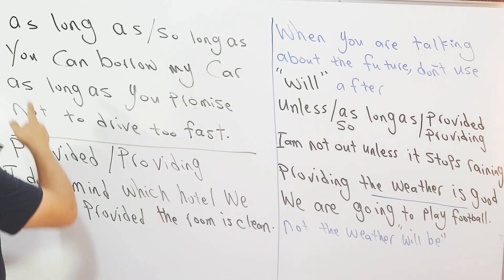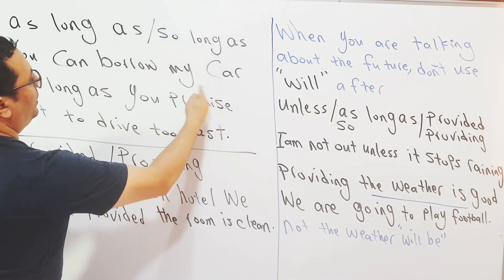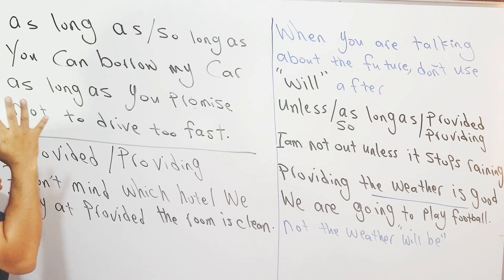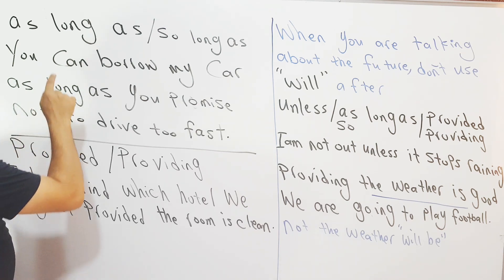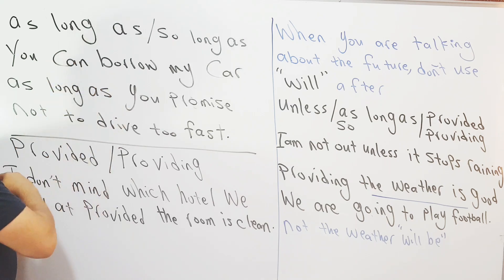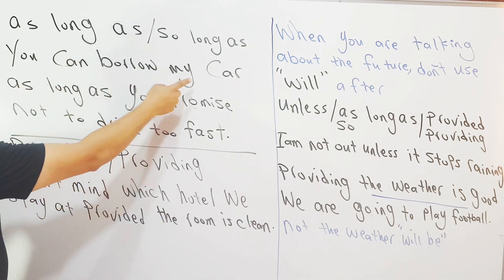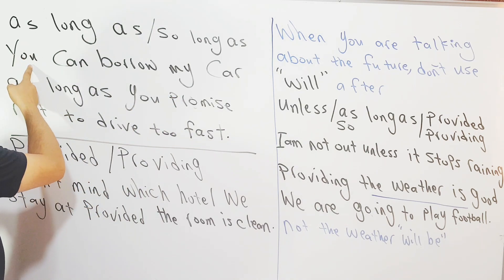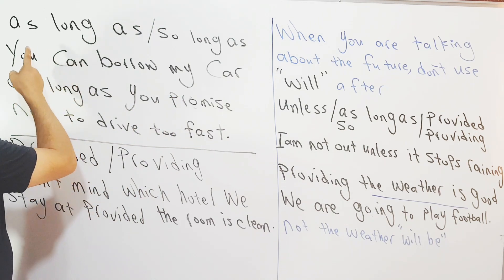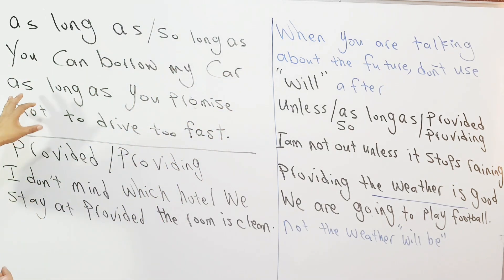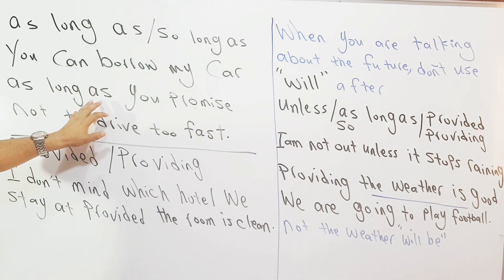'My car' - يعني فاعل ثم فعل ثم مفعول به. أنت الفاعل، والفعل تستطيع أن تستعير - فعلين لا يوجد إشكالية. 'My car' - سيارتي - المفعول به. ممكن أن نغيرها ونقول: 'You sleep', 'You go', 'You buy' - وتضع أي مفعول به آخر.